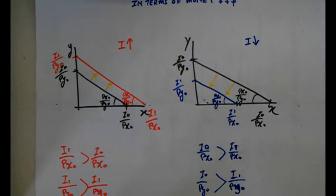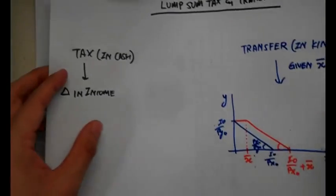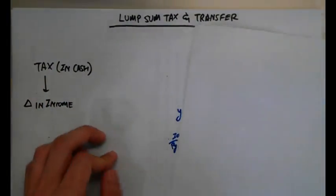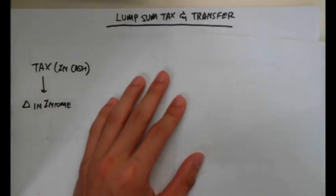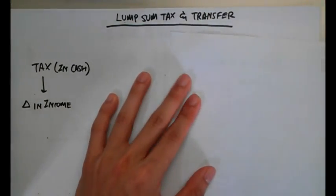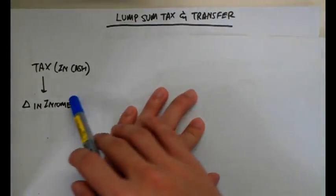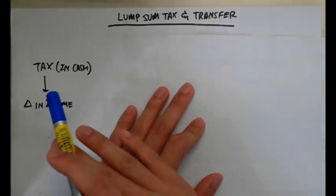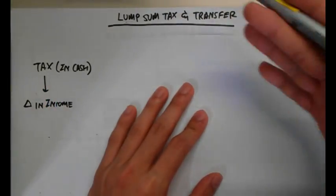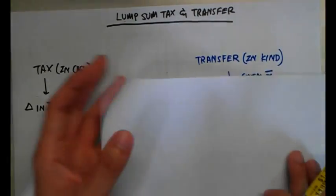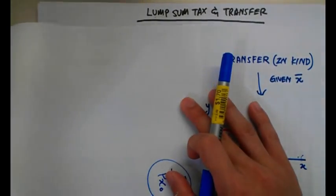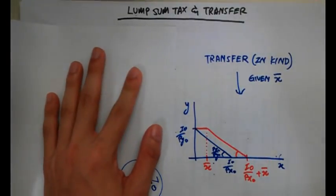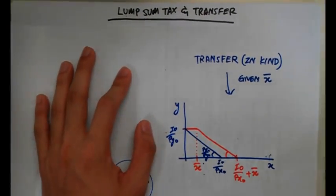Now we go to lump sum taxes and transfers. A lump sum tax is the government making you pay a certain sum at the end of every year — it's simply a change in income. Your income decreases, so your budget constraint shifts inwards.